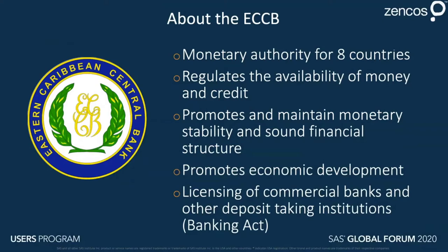The ECCB's mandate includes regulating the availability of money and credit, promoting and maintaining monetary stability and a sound financial structure, and providing credit and exchange conditions conducive to the balanced growth and development of member country economies. The ECCB's main target is maintaining a competitive fixed exchange rate — it has maintained a fixed rate to the US dollar of 2.7 to 1 for the last 43 years.